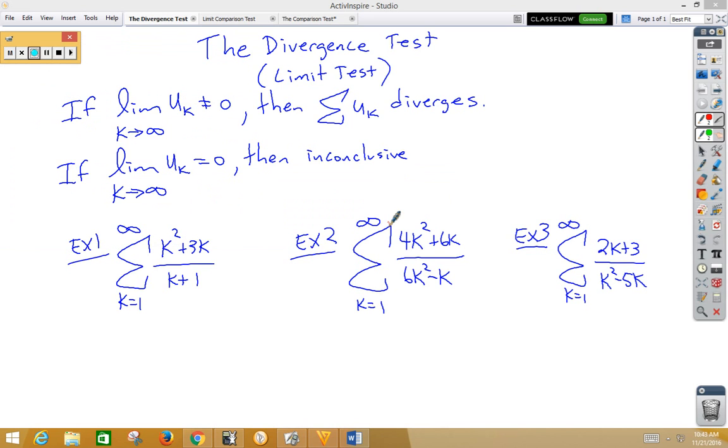The rules go something like this: If the limit as k approaches infinity of u_k does not equal zero, then the series for u_k diverges.